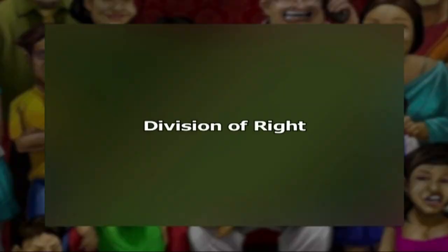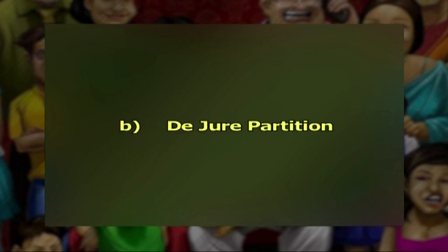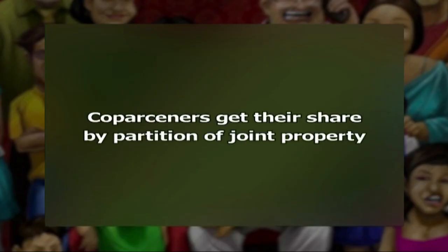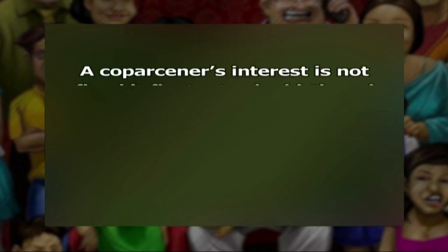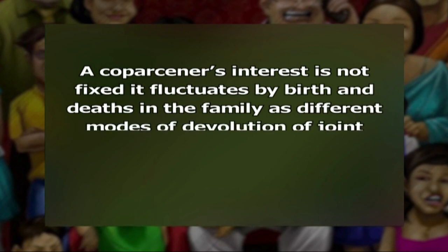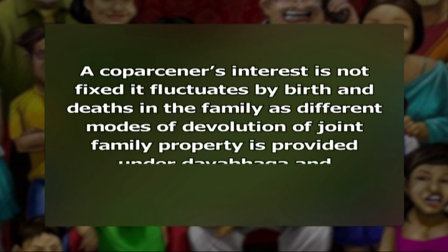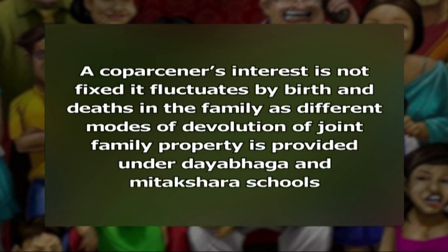Partition once demanded works out in two phases: de facto partition, also known as division of right, and de jure partition, also known as division of property. Within the joint family there is a narrow body called co-parsenery which has a definitive right in joint family property. A co-parsener's interest is not fixed — it fluctuates by births and deaths in the family, as different modes of devolution of joint family property are provided under Dayabhaga and Mitakshara schools. With this I conclude this lecture. Thank you.